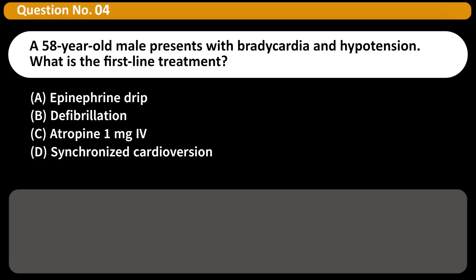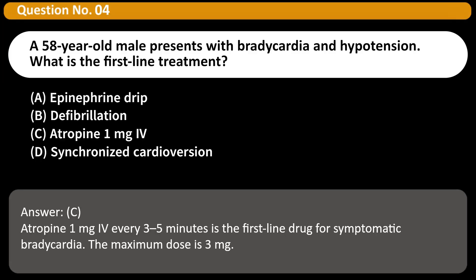A 58-year-old male presents with bradycardia and hypotension. What is the first-line treatment? A. Epinephrine drip. B. Defibrillation. C. Atropine 1mg IV. D. Synchronized cardioversion. Answer: C. Atropine 1mg IV every 3-5 minutes is the first-line drug for symptomatic bradycardia. The maximum dose is 3mg.